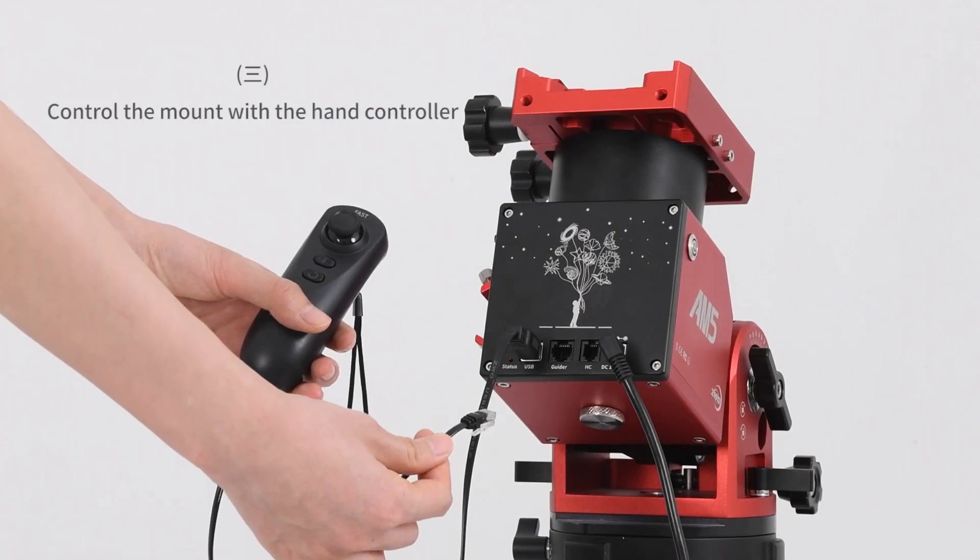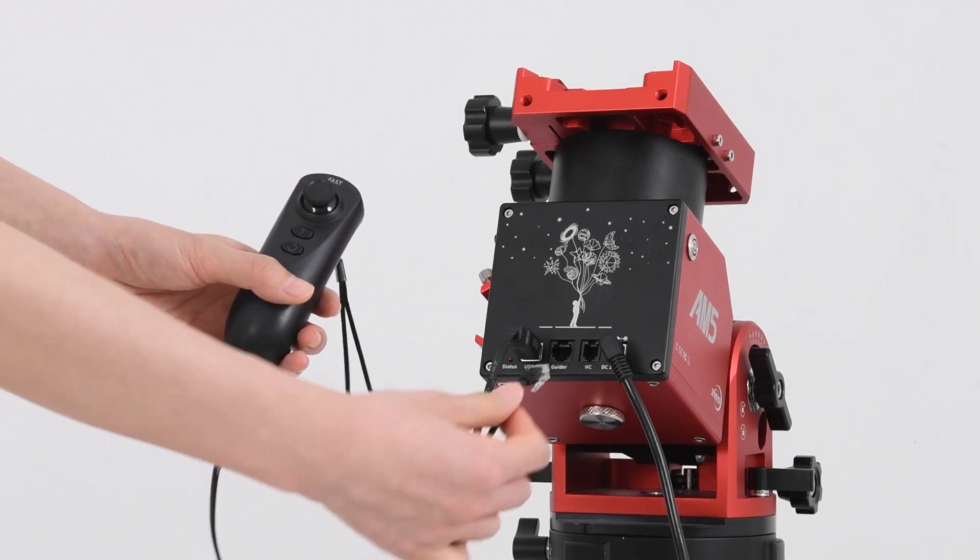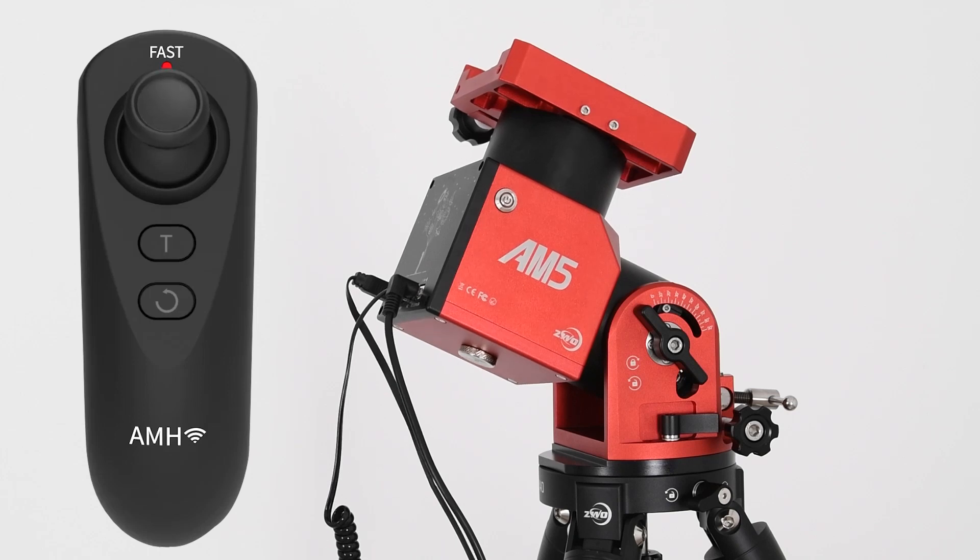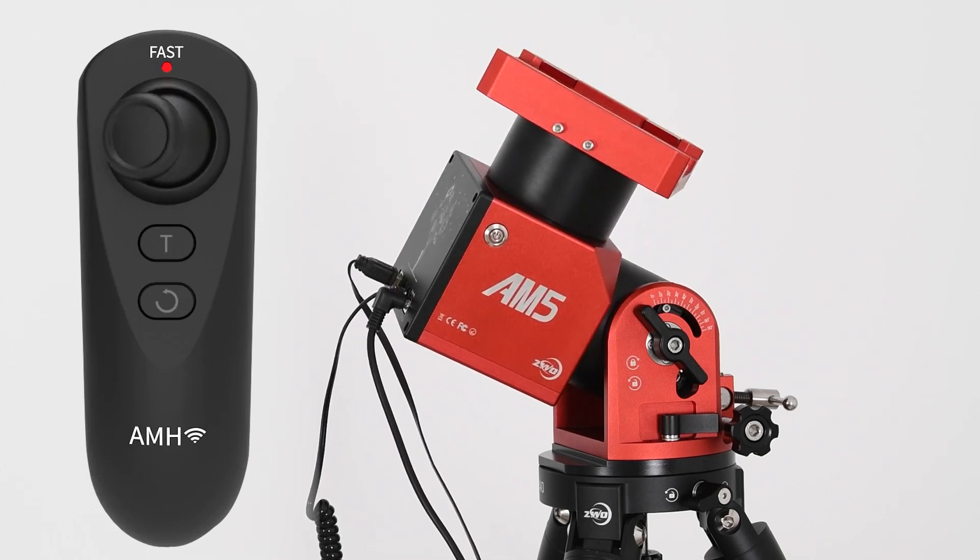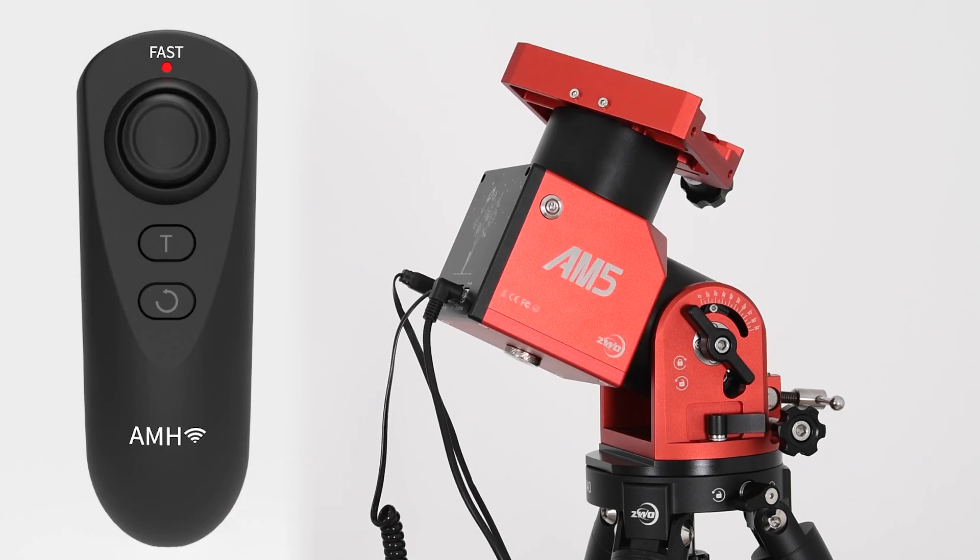Hand controller. Link the hand controller to the AM5's hand controller interface with the included hand controller cable. The joystick can be clicked on as a button. This switches between high speed and low speed tracking. Move the joystick with the corresponding direction and amplitude to obtain the desired tracking speed.